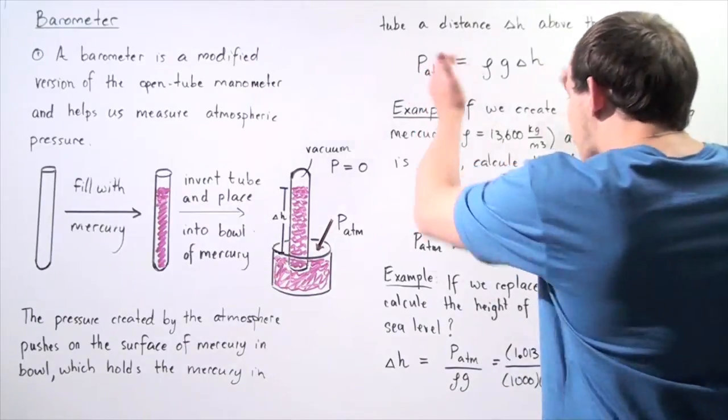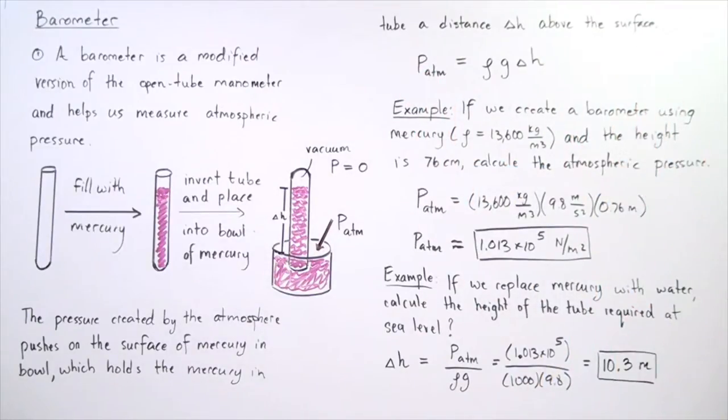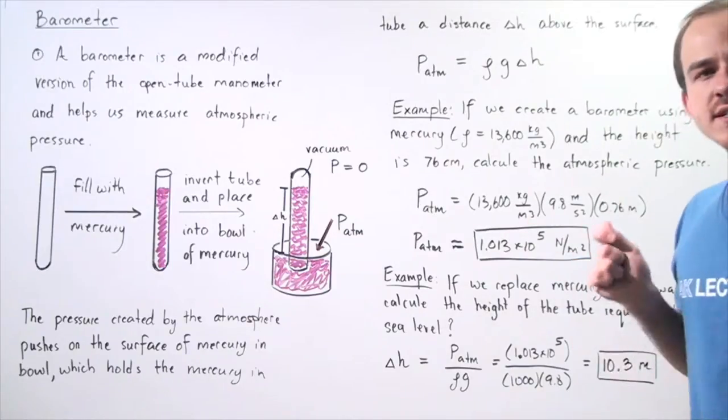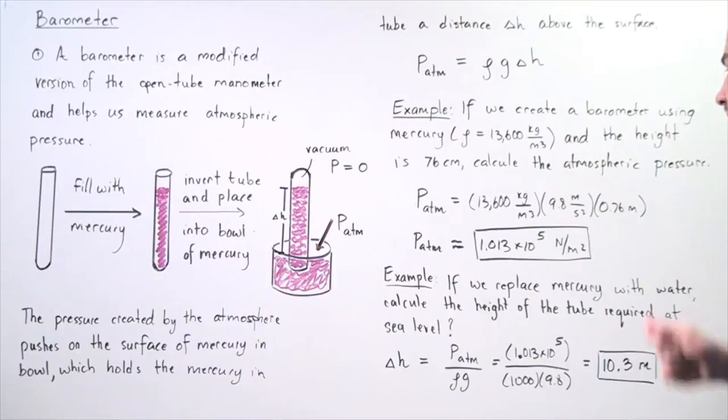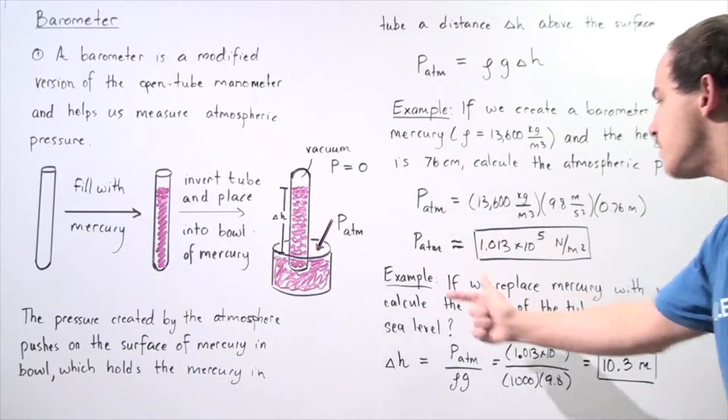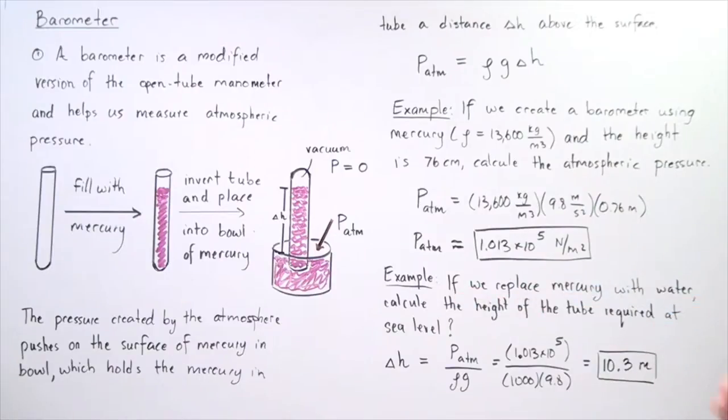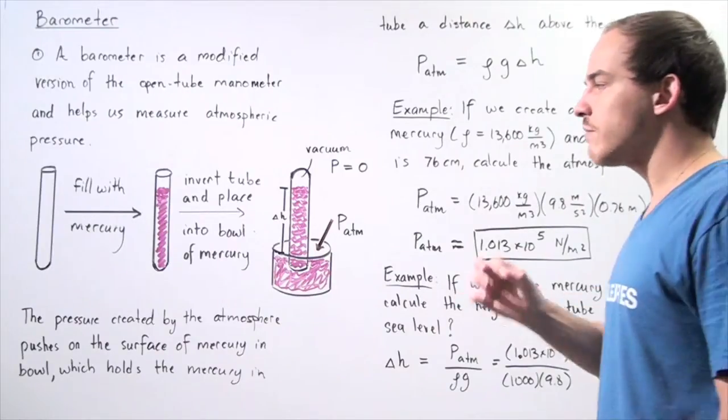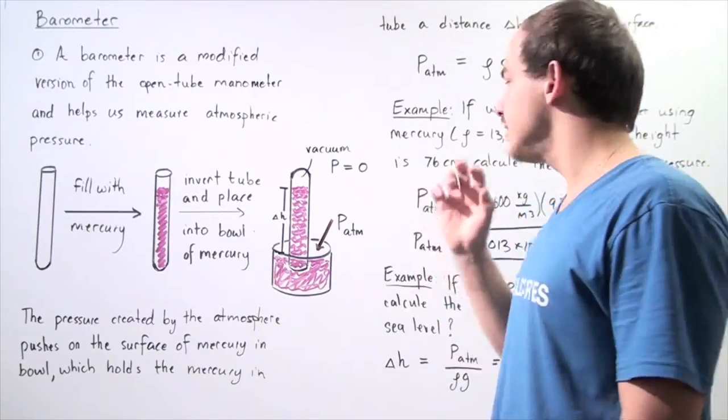We simply take our equation, we plug in our values of 13,600, 9.8 and 0.76 meters. We multiply the values out and we get approximately 1.013 times 10 to the 5 newtons per meter squared, which happens to be the same exact value as our pressure of the atmosphere at sea level.